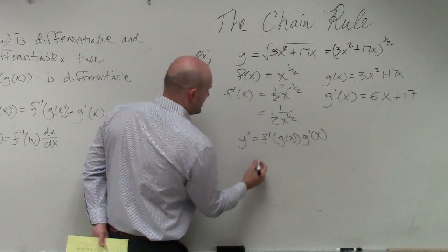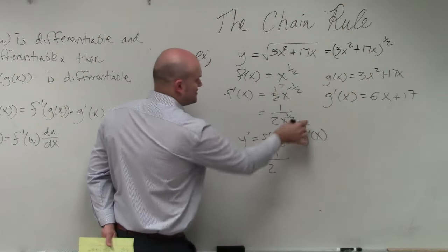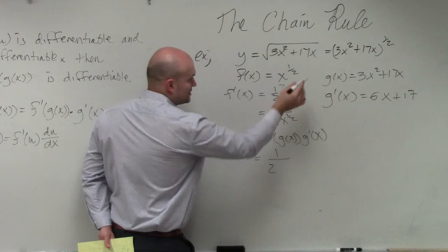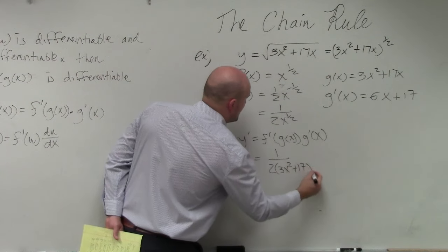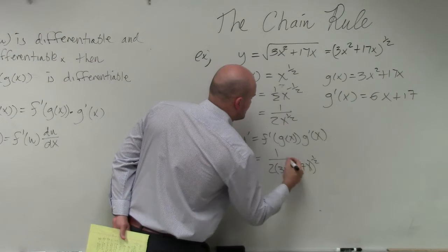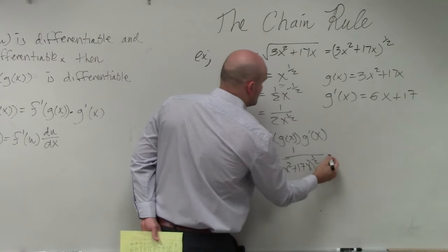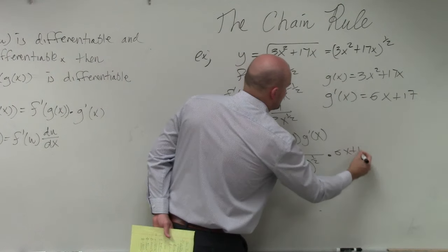So f prime is going to be 1 over 2 times, or plugging in my g of x, which is 3x squared plus 17x raised to the 1 half power, times 6x plus 17.